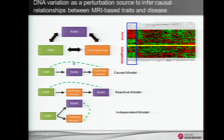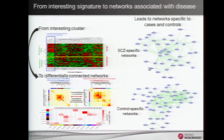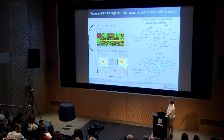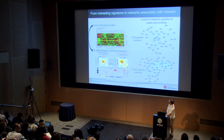We can start uncovering probabilistic causal networks — going from clusters of imaging-based data to networks of imaging-based data, where we understand how those different nodes in the network — which can include not only expression but also structural and functional imaging traits — fit together in networks and how these networks can be differentially connected between disease and normal states.